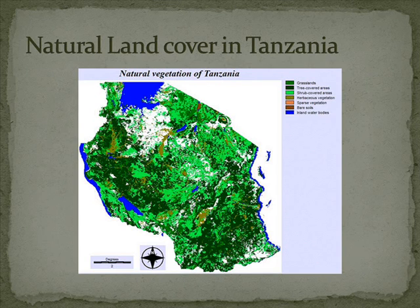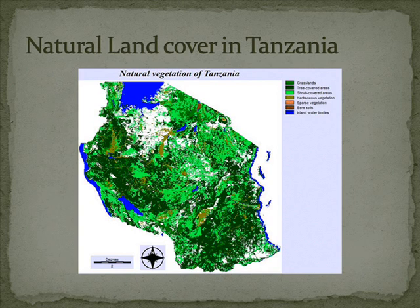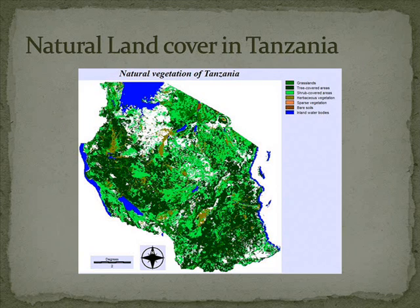Tanzania comprises several continental islands. Unguja, also known as Zanzibar, Pemba, and Mafia Islands are the Zanzibar Archipelago. Africa's greatest lakes surround this country, with Lake Victoria to the north, Lake Tanganyika to the west, and Lake Malawi in the south. The natural land cover of Tanzania is dominated by six main vegetation types.